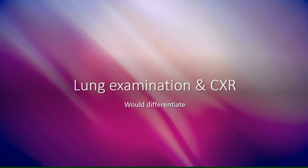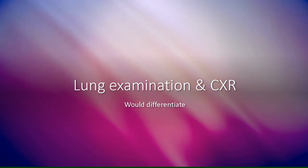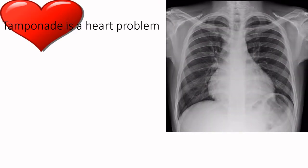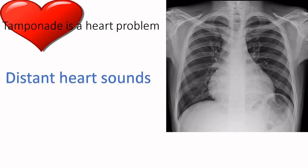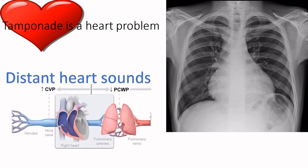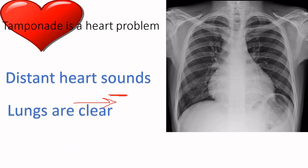The things on lung examination and chest X-ray that the question stem gives you are what will differentiate cardiac tamponade from tension pneumothorax. Think of tamponade as a heart problem — all the abnormalities will be in the heart. Think of pneumothorax as a lung problem. For tamponade, on auscultation there are distant heart sounds but the lungs are clear. The lungs are clear because there's impedance to blood flow from the right heart to the left heart, so there's decreased blood flow to the lungs — no crackles or anything.